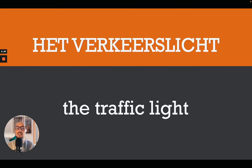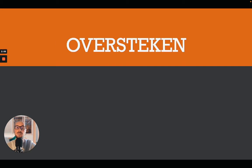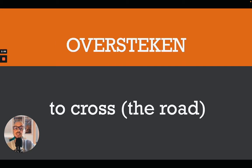Of course, the traffic light in Dutch would be 'het verkeerslicht.' Het verkeer is traffic, and a light is a licht, so the traffic light is 'het verkeerslicht.' The intersection in Dutch is 'het kruispunt.' Literally translated, it would be 'the crossing point' — 'het kruispunt' is the intersection.